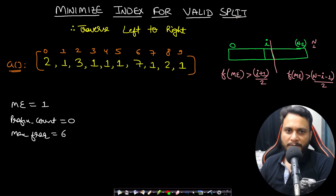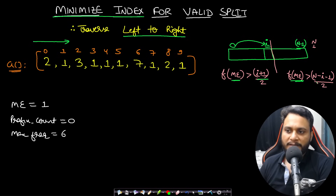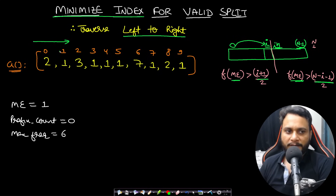To minimize the index, traverse from left to right. At any given index i, the frequency of the majority element on the left must be greater than (i+1)/2, because there are i+1 items from 0 to i. The frequency on the right must be greater than (n-i-1)/2, because there are n-i-1 items from i+1 to n-1. This is the condition for a valid split.